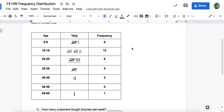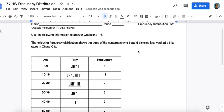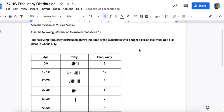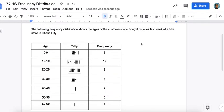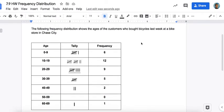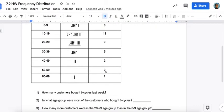Welcome to my homework video on frequency distribution. You had to use the following frequency distribution to answer questions one through six. This shows the ages of customers who bought bicycles last week at a bike store in Chase City. So this means six people who were ages zero to nine bought bikes. There were 12 people who bought bikes that were between the ages of 10 to 19, and so on. You can see there are nobody ages 50 to 59 who bought bikes.